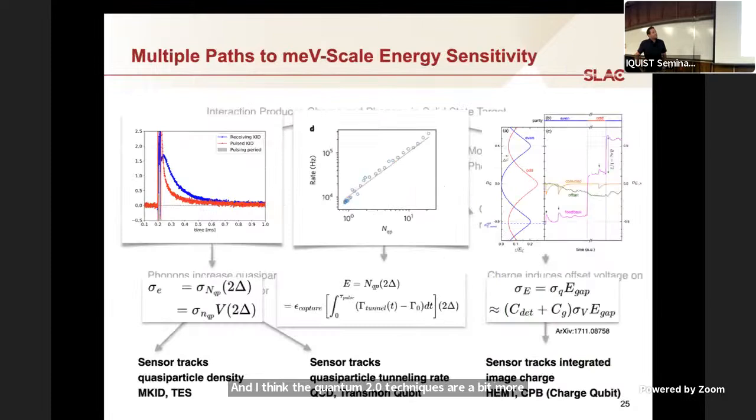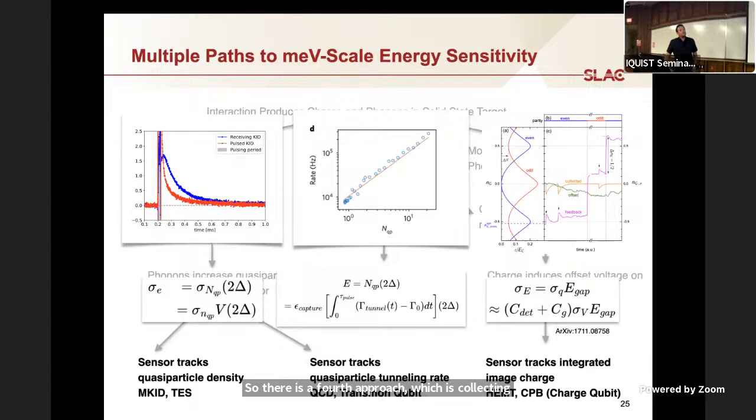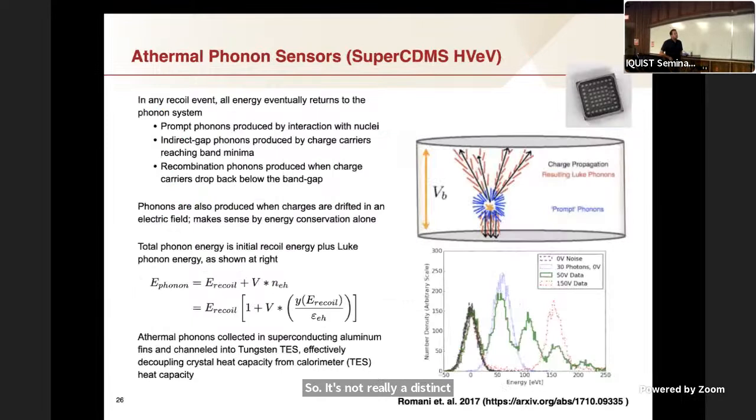We still need to use some sort of focusing to get really low energy thresholds. In the tunneling case, the energy scales with essentially our ability to count tunneling events and the efficiency of quasi-particles to interact with the junction. In the charge case, this equation hasn't changed in maybe 70 years. You want something with really small capacitance, and you need to be able to read out very small image charges. This is an overall strategy that we're using in the community to try to push down thresholds. For each of these approaches, there exists a quantum 1.0 and a quantum 2.0 technique. The quantum 2.0 techniques are a bit more promising.